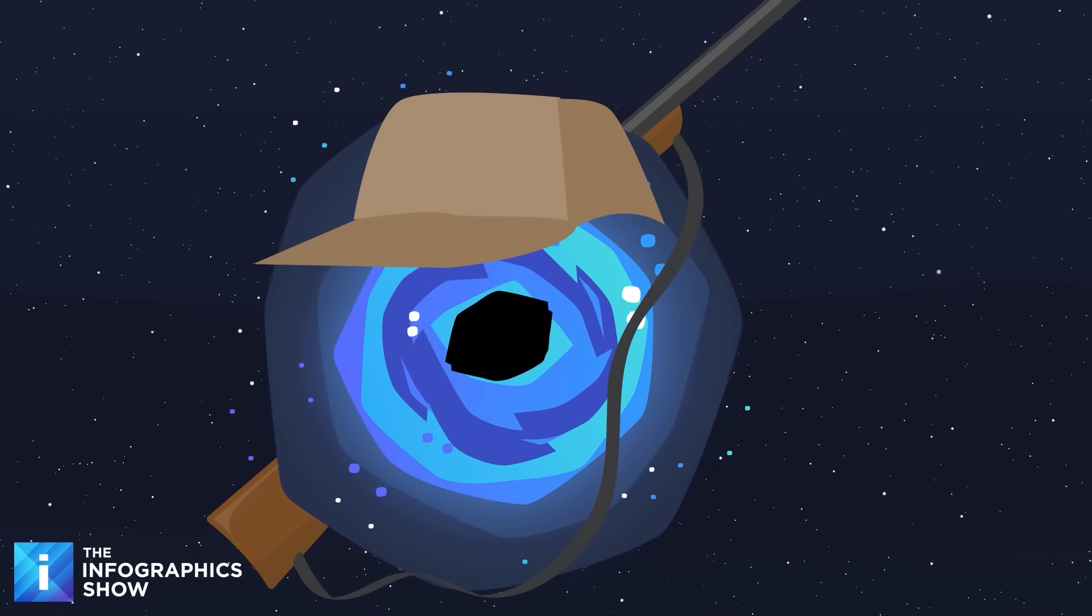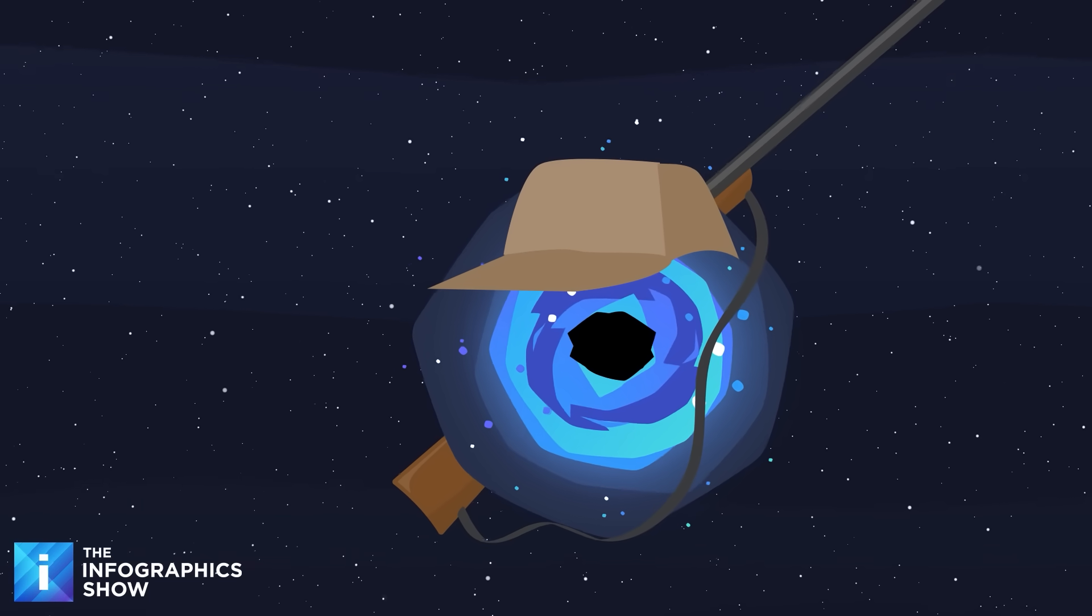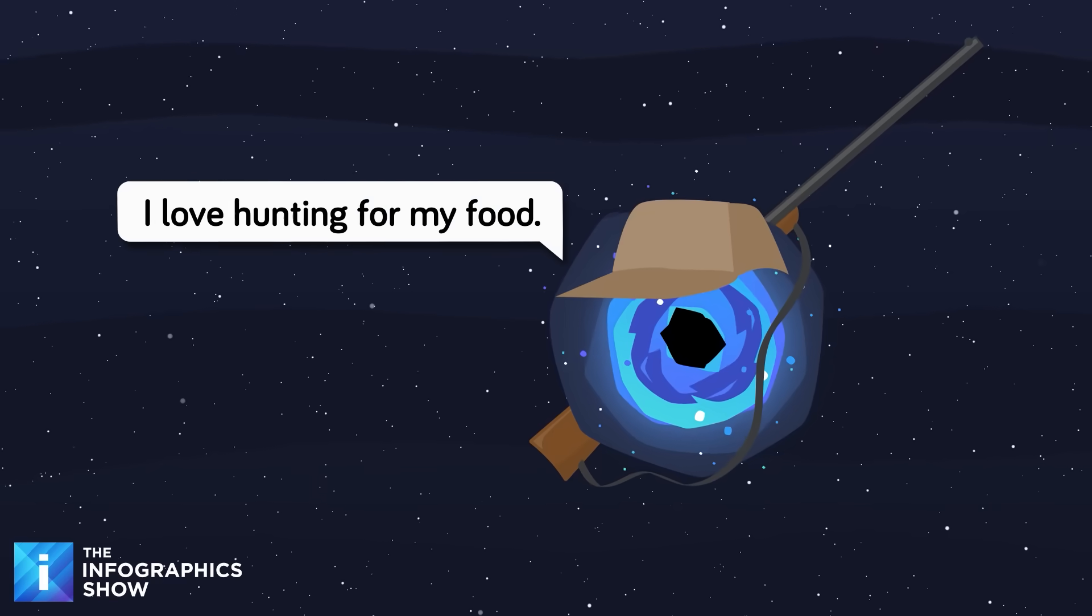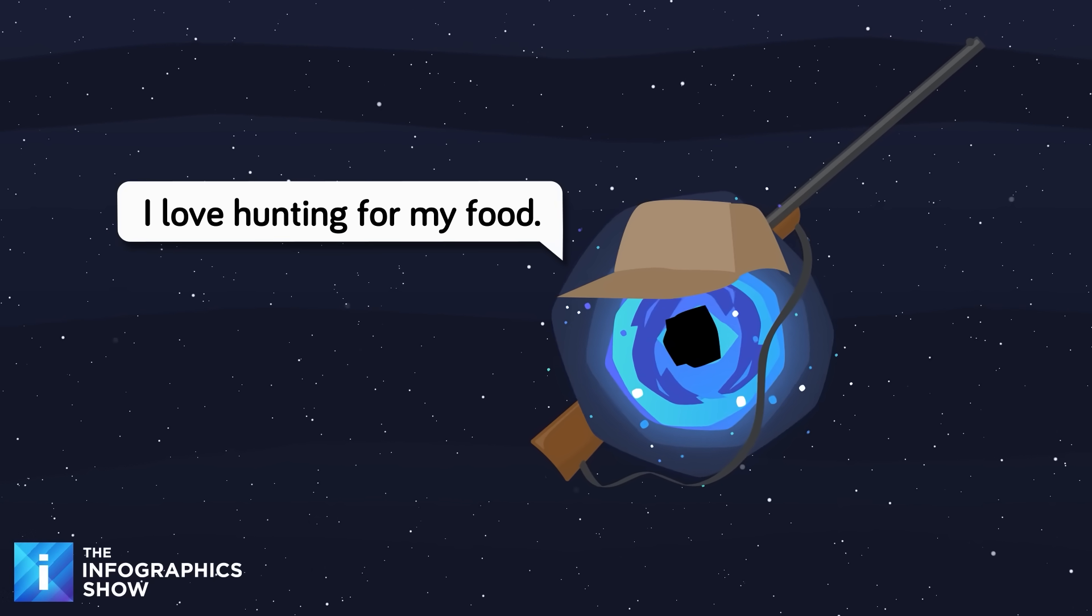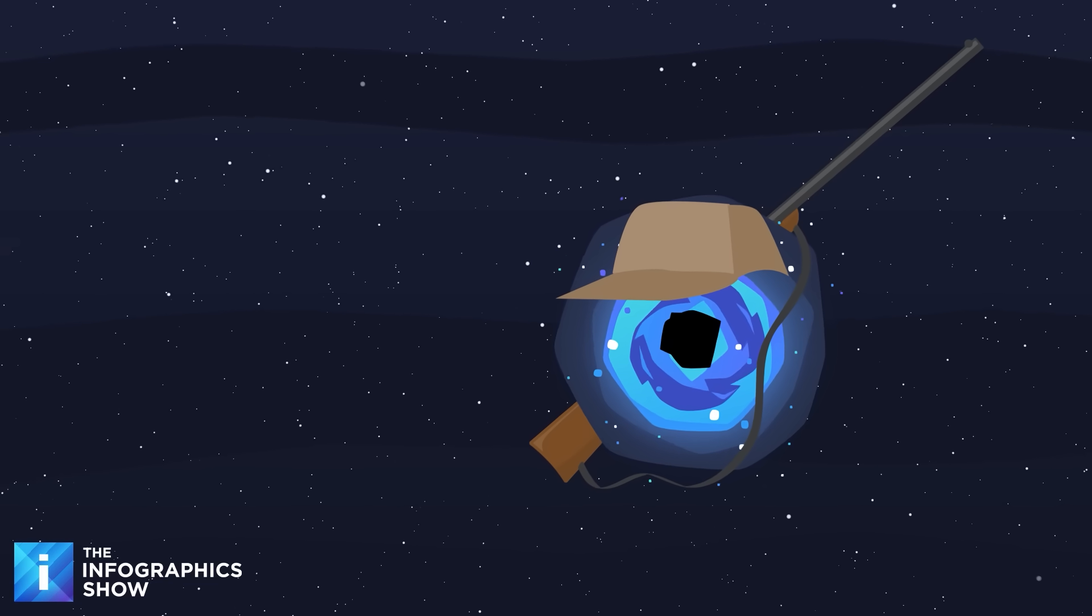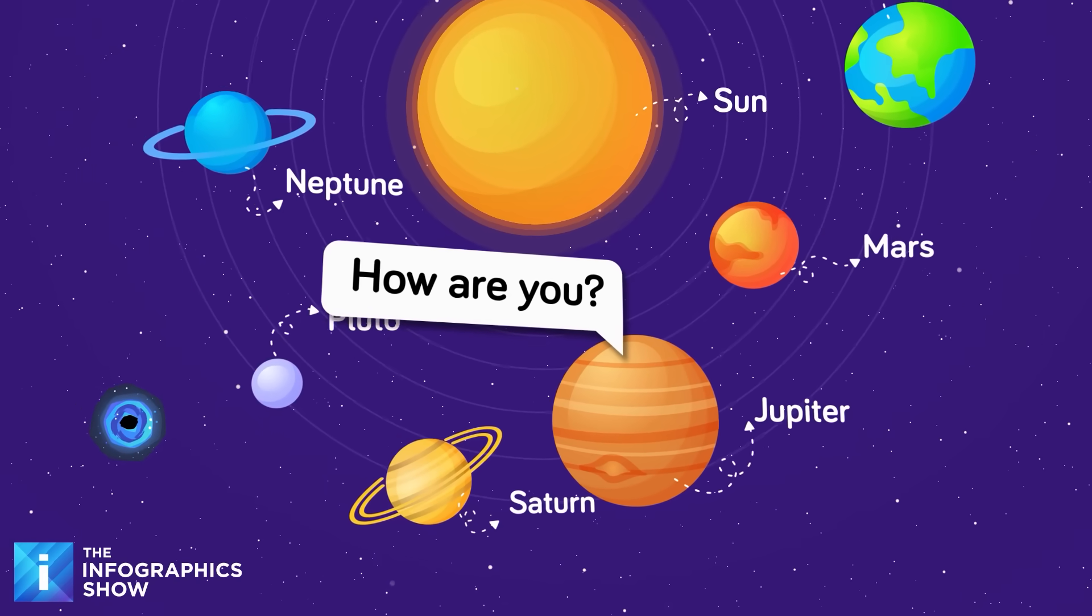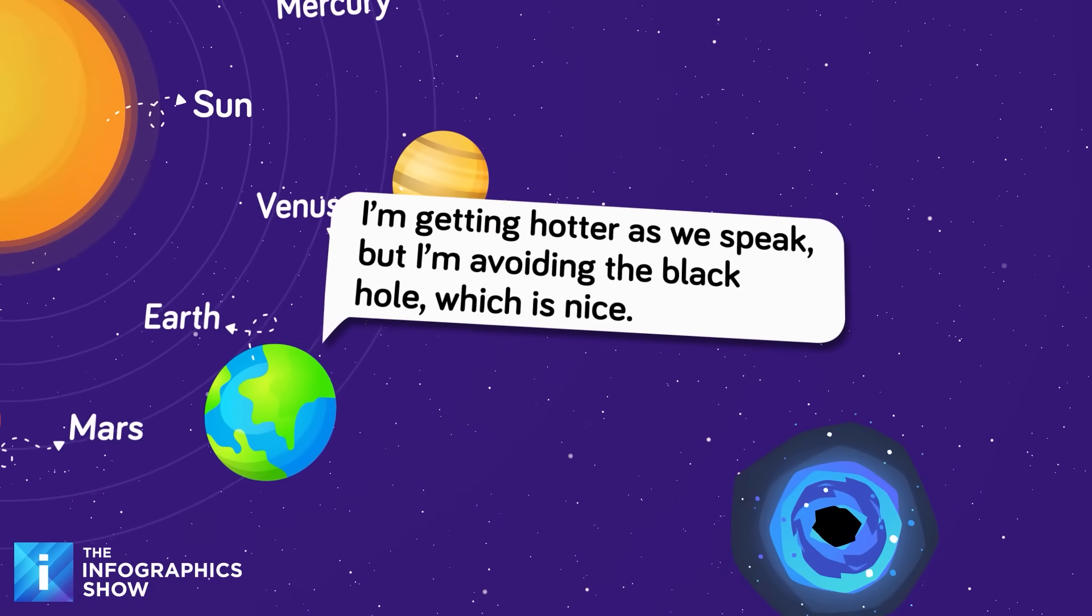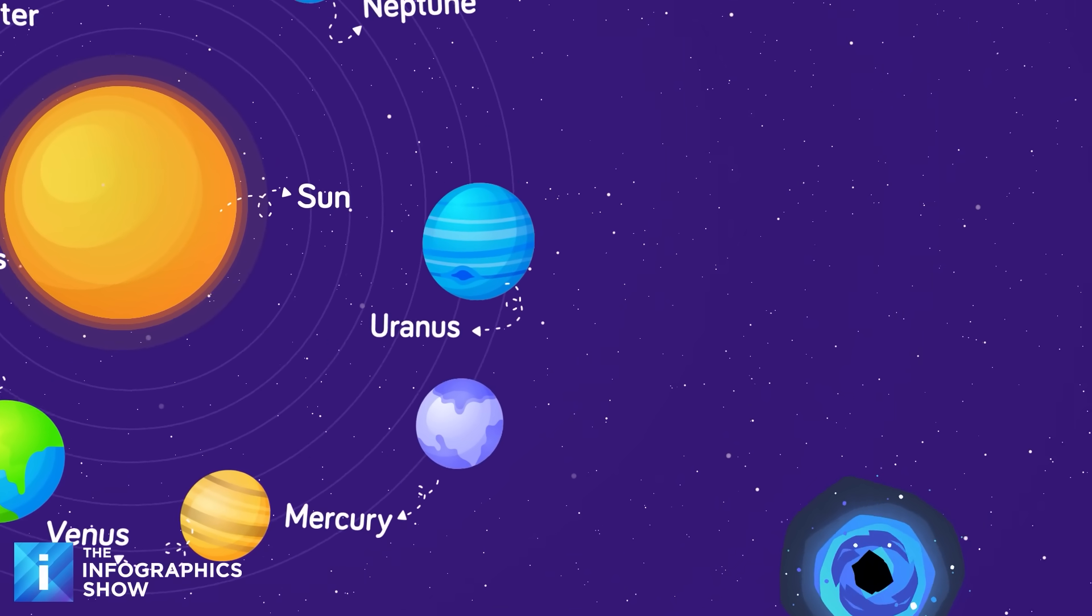The real feeding frenzy happens on smaller scales. Every dead star becomes potential black hole food. White dwarfs, those Earth-sized stellar corpses that could shine dimly for trillions of years, eventually spiral into their dark neighbors. Neutron stars matter so dense that a matchbox-sized piece would weigh about 3 billion tons, get swallowed whole. Planets don't escape either. Those that survive wander through space until gravitational interactions eventually deliver them to hungry black holes. Jupiter, Earth, every asteroid, and comet are all destined for the same fate.